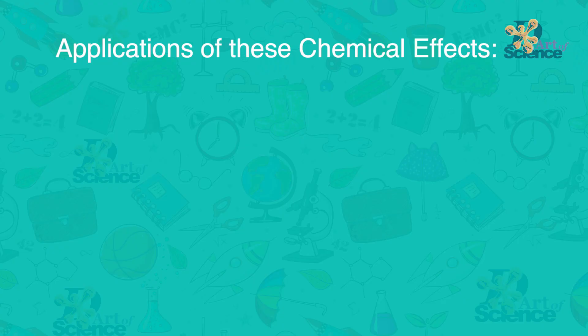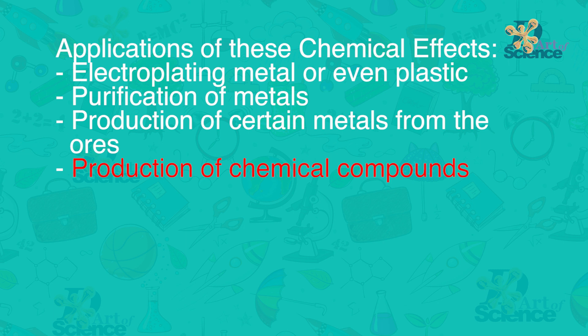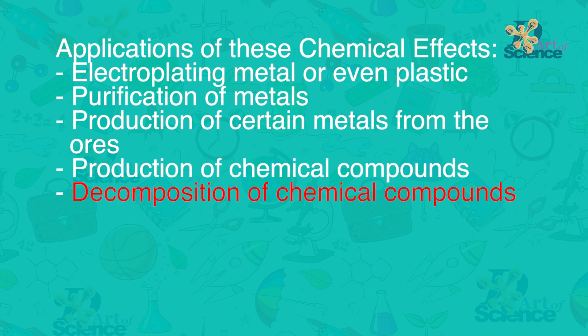Now let's explore some applications of these chemical effects. It is used for, for example, electroplating metals and even plastics, for purification of metals, for production of certain metals from their ores, also for production of chemical compounds, and it's used for decomposition of chemical compounds.